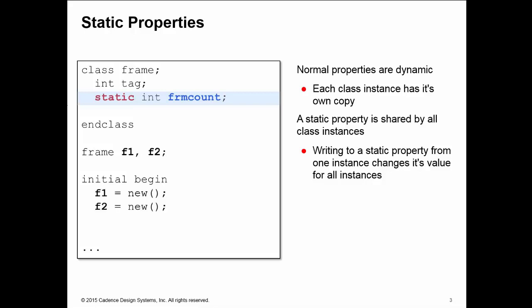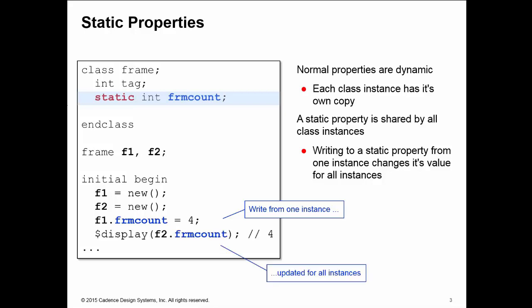So here I have two instances of frame in F1 and F2. If I assign the static property frame count to be equal to 4 from one class instance F1, I've also set the property of the F2 instance of frame to be 4 as well. By writing the static property from one instance you update it for all of the instances.